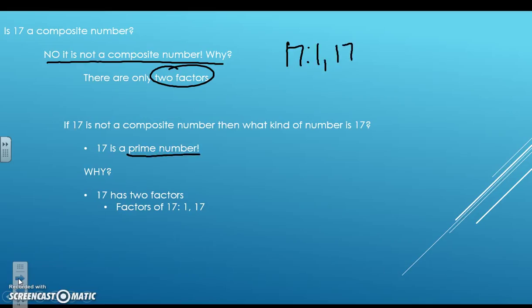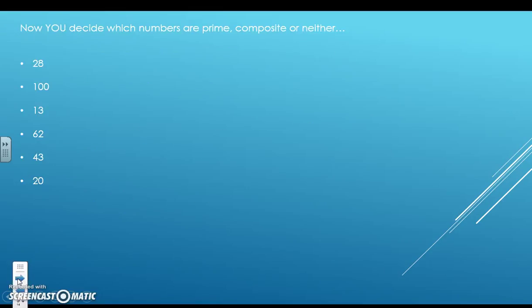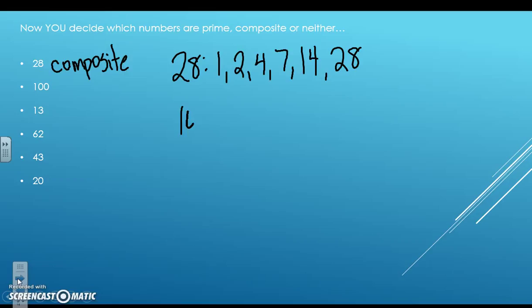Therefore 17 is a prime number. So let's talk about whether these numbers are prime or composite. So 28. Well the factors of 28 are 1, 2, 4, 7, 14, and 28. So 28 is composite because there's more than two factors.